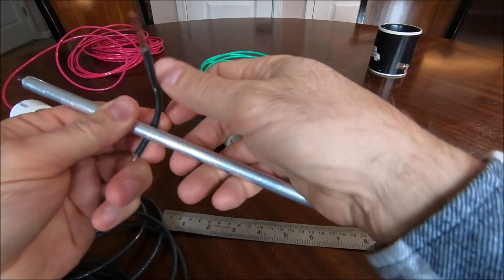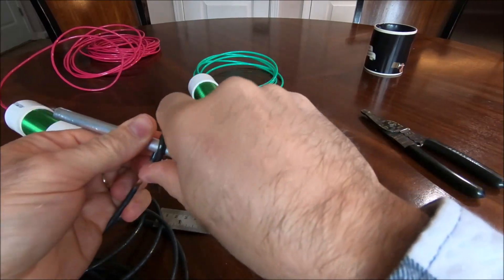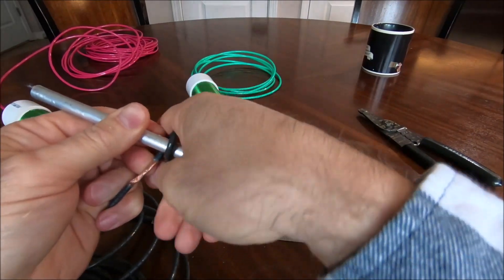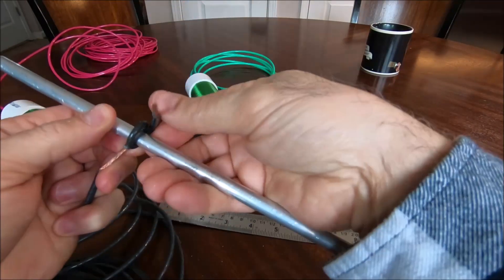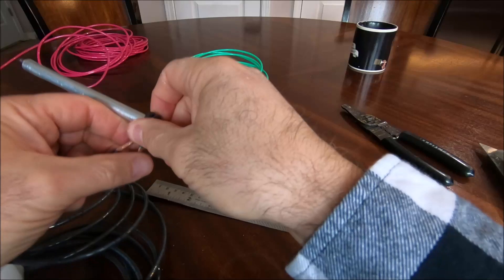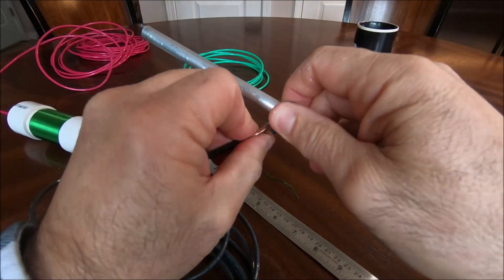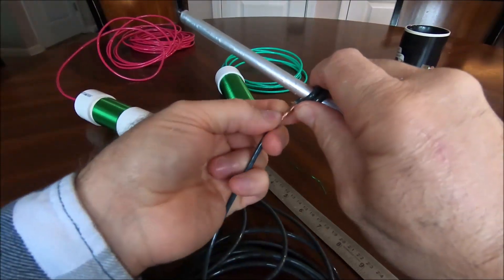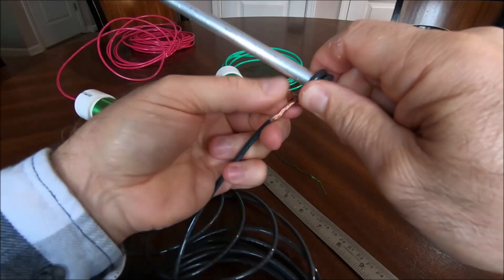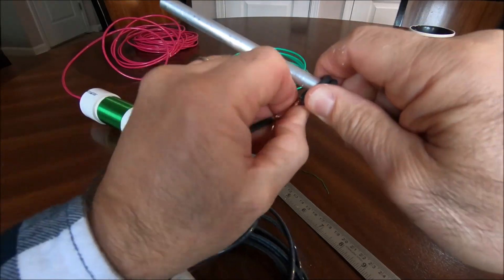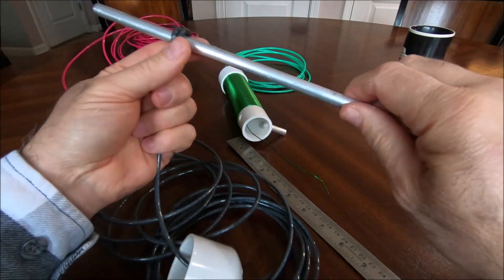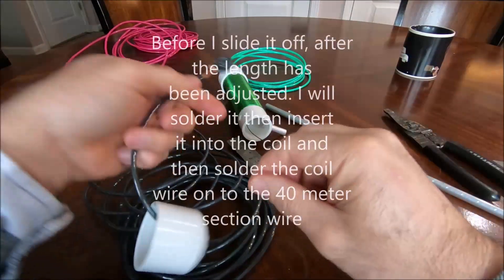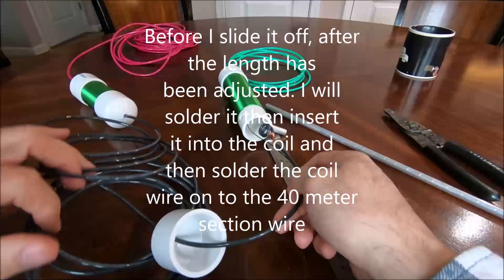So what I'll do is I'll wrap this once. And I'll wrap it twice. Pull this tight. And then I will twist this around like this. That will hold that there. Now I can slide this off. And then I can slide it into here.